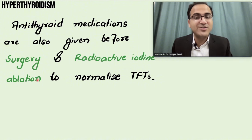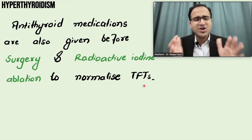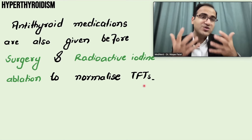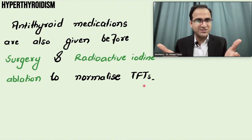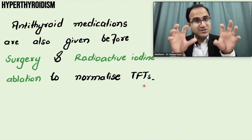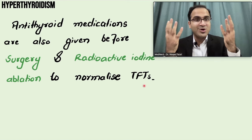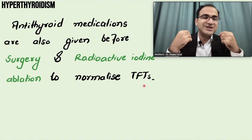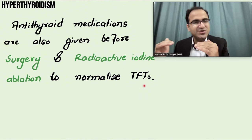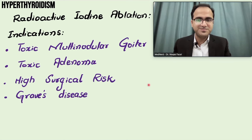Antithyroid medications can also be given before surgery or radioiodine ablation to normalize thyroid function tests. In patients with toxic multinodular goiter or toxic adenoma, you prepare the patient with antithyroid drugs so that thyroid function is controlled before surgery, preventing thyroid storm from the release of large amounts of preformed thyroid hormones during the procedure. You give antithyroid drugs until thyroid function normalizes, then remove the gland.